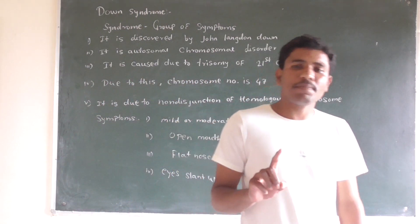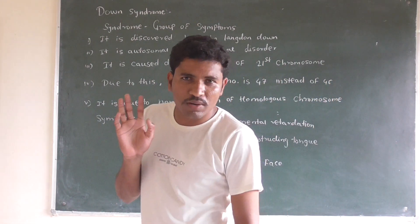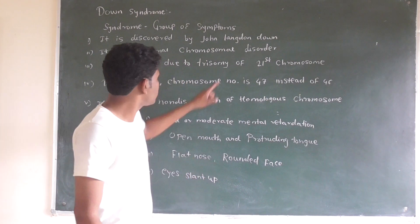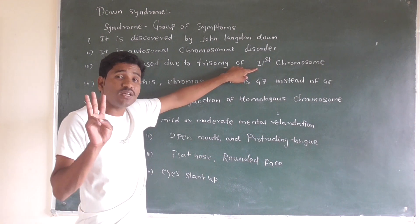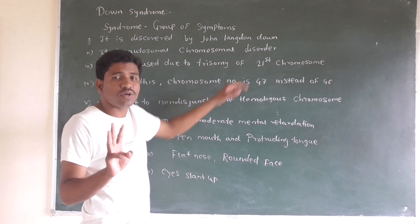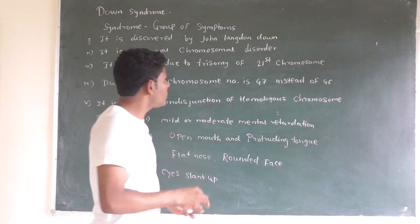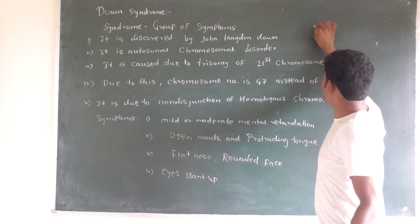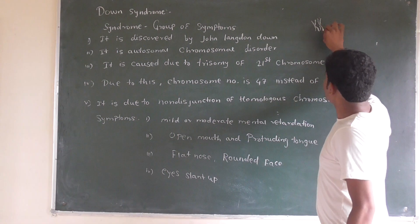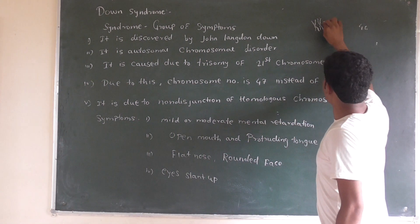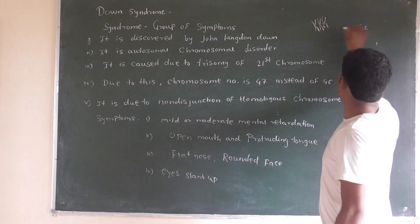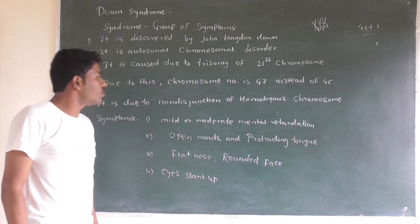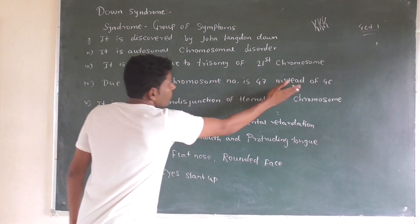What is trisomy? Normally genes work in pairs, but in trisomy there are three copies. In Down syndrome there are three copies of chromosome 21. Normally the chromosome number is 46. When one extra chromosome is added, the chromosome number becomes 47 instead of 46.